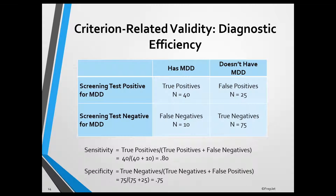Specificity is the proportion of people without the disorder who are correctly identified by the test as not having the disorder. It's calculated by dividing the true negatives by the true negatives plus the false positives. The screening test specificity is 75 divided by the sum of 75 plus 25, which is 0.75. This means that for people who do not have the disorder, there's a 75% chance that the results of the screening test will be negative.